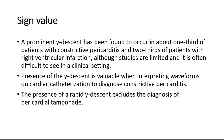For its sign value, a prominent Y-descent has been found to occur in about one-third of patients with constrictive pericarditis, and two-thirds of patients with right ventricular infarction, although studies are limited and it is often difficult to see in a clinical setting. The presence of the Y-descent is valuable when interpreting waveforms on cardiac catheterization to diagnose constrictive pericarditis. The presence of a rapid Y-descent excludes the diagnosis of pericardial tamponade.